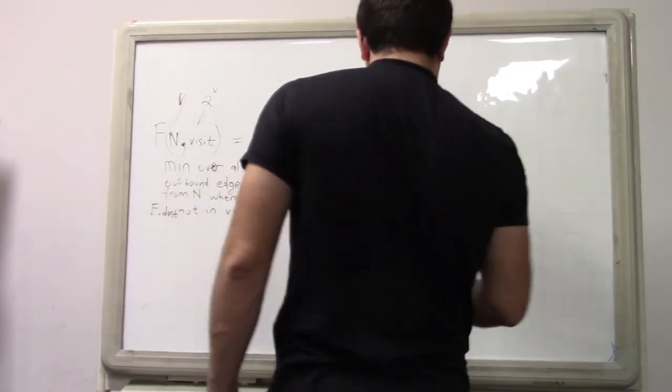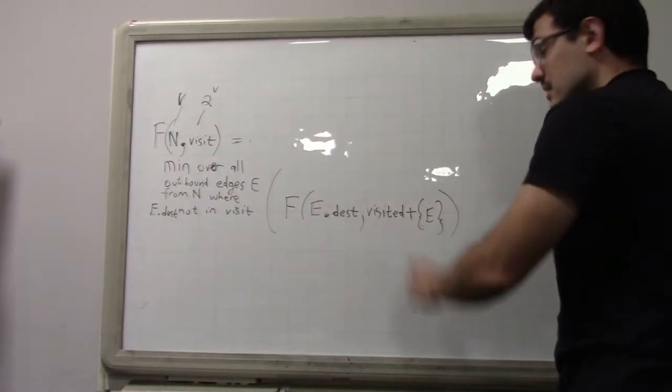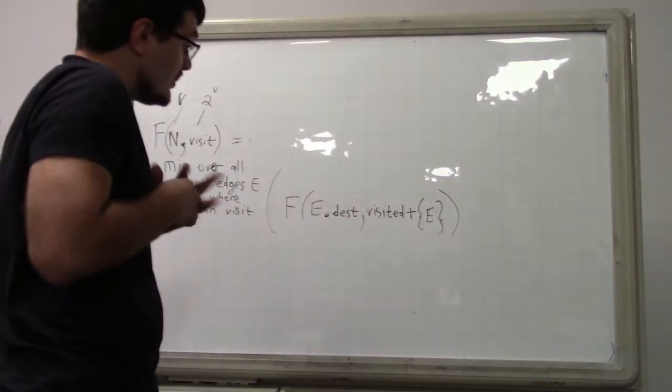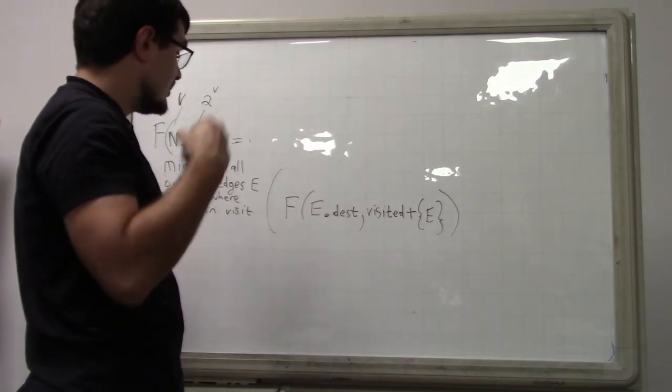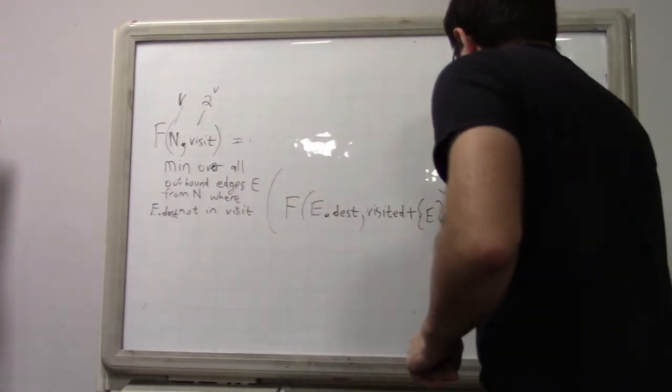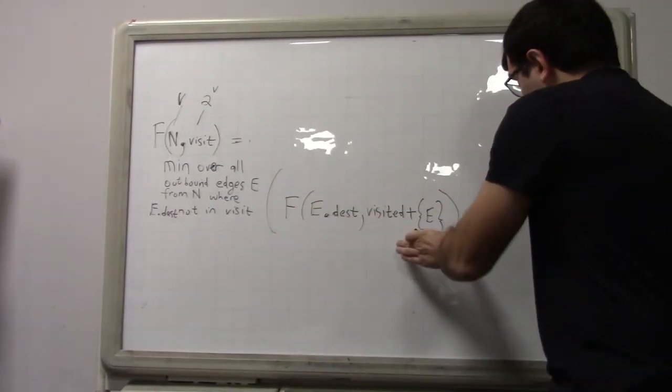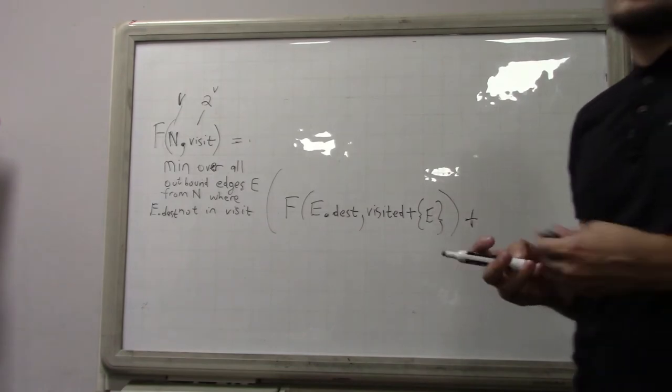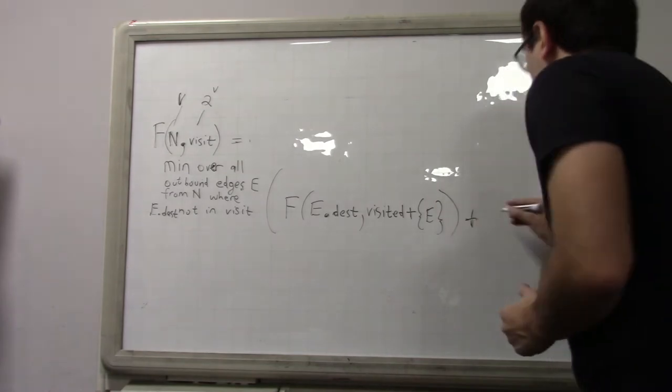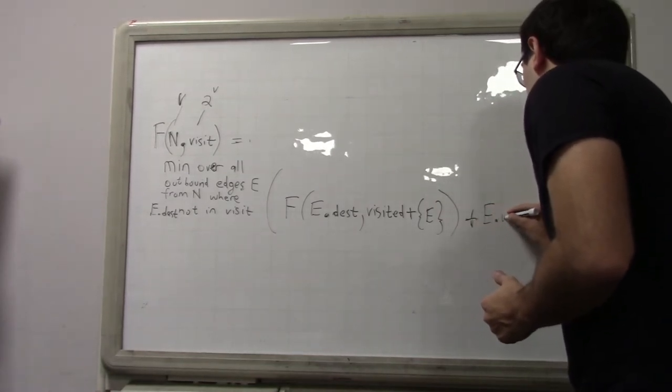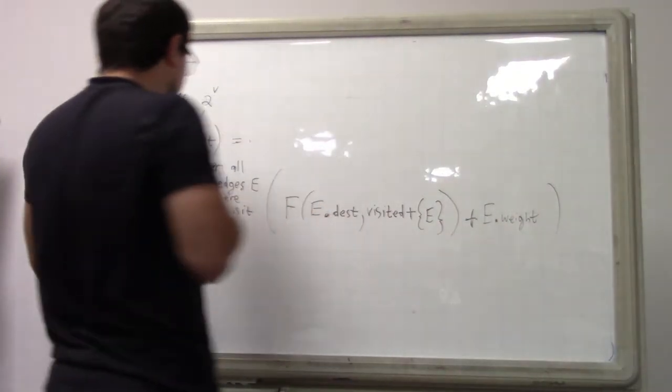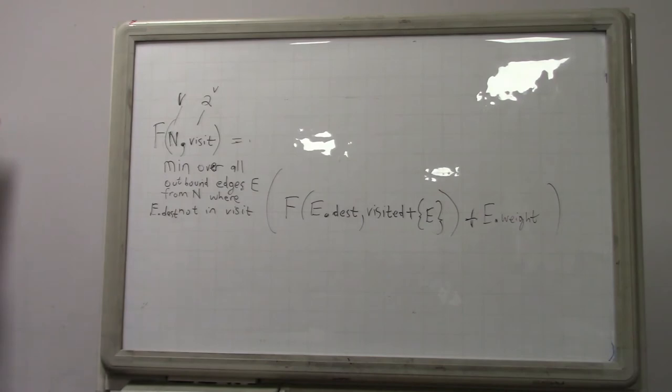Okay. You will basically union these two sets. Okay. So this will be the cost of proceeding from that point, but then you also have to charge yourself for just the cost of going to that vertex, right? And so this will just be E dot weight. Okay. And that's pretty much it for this problem.